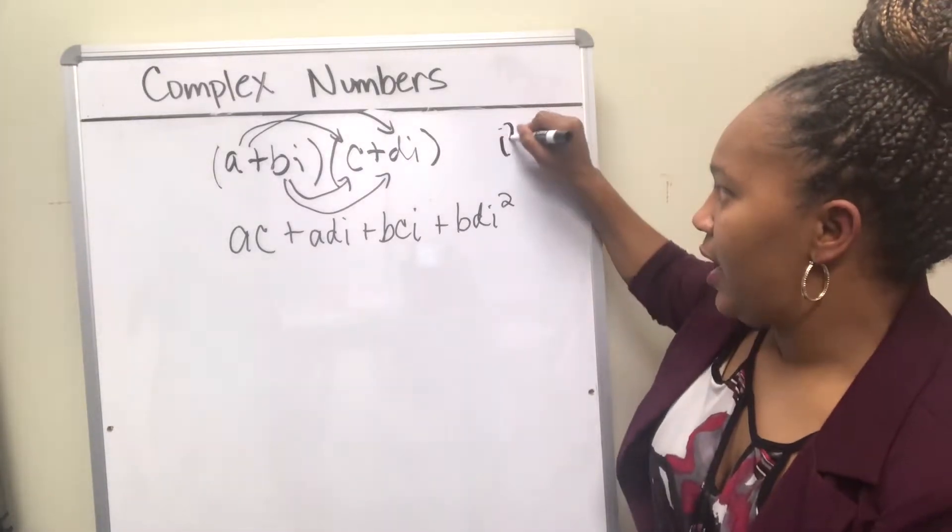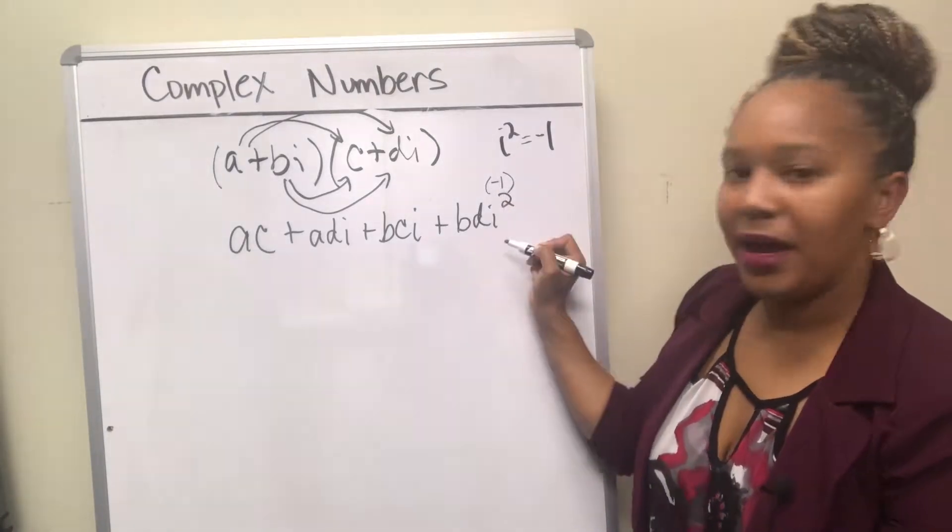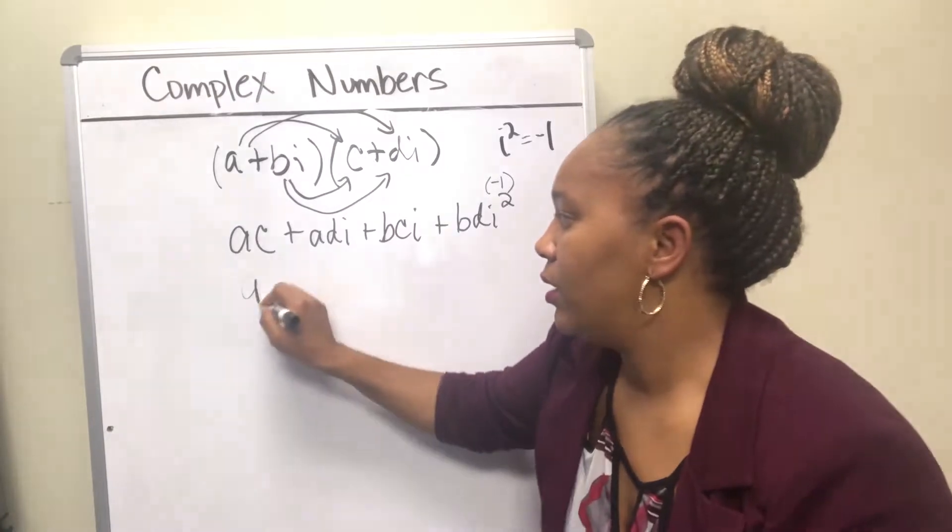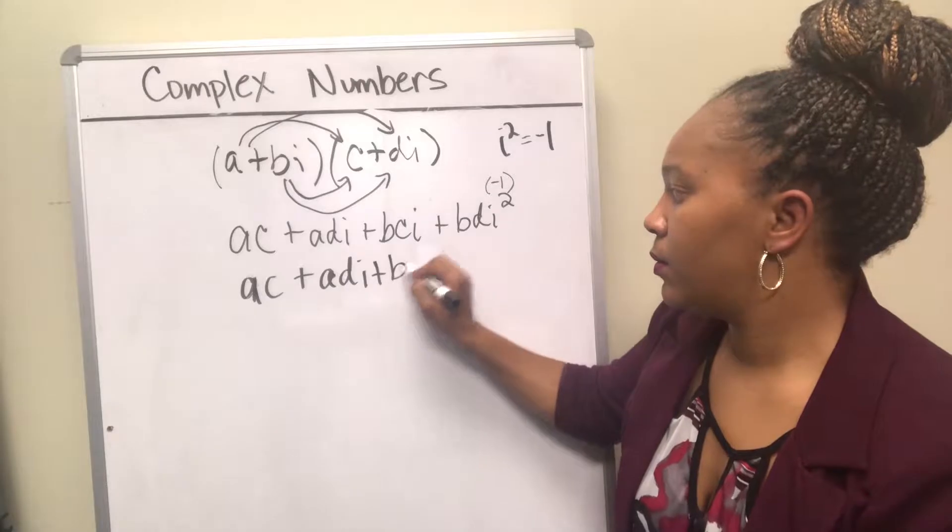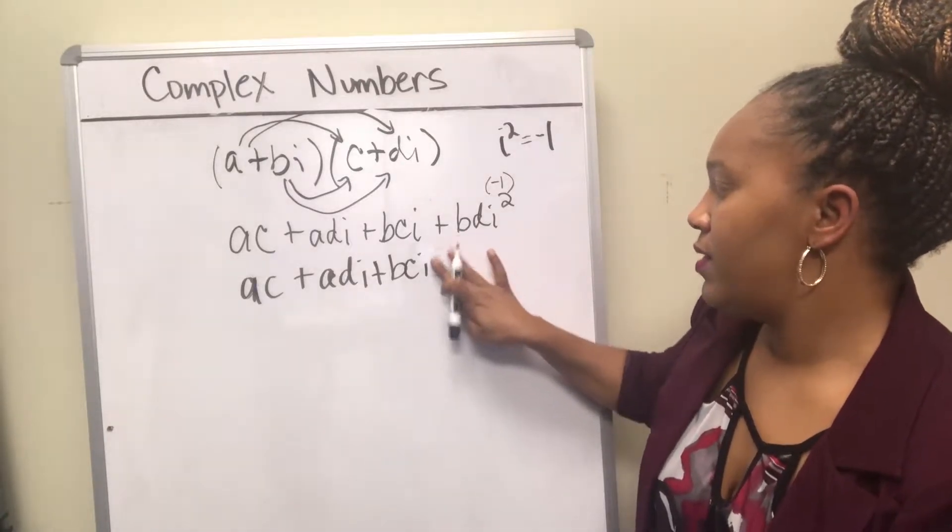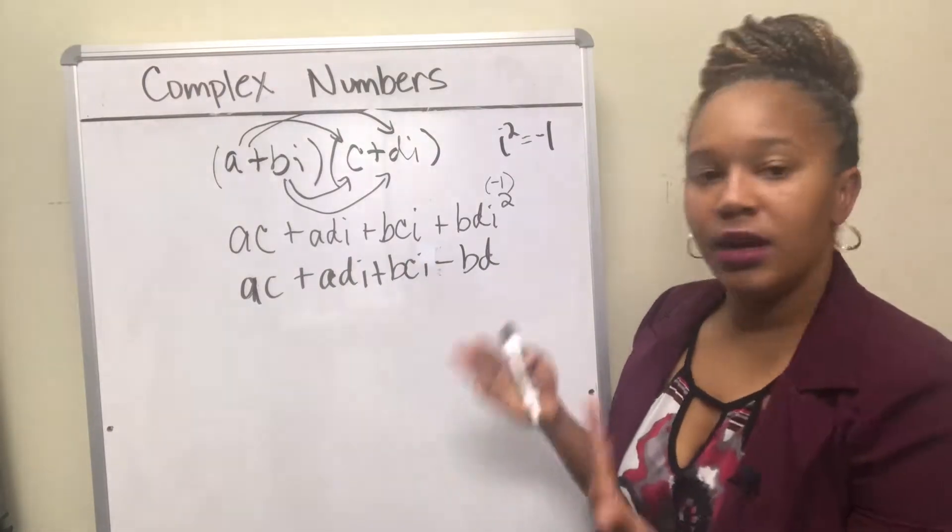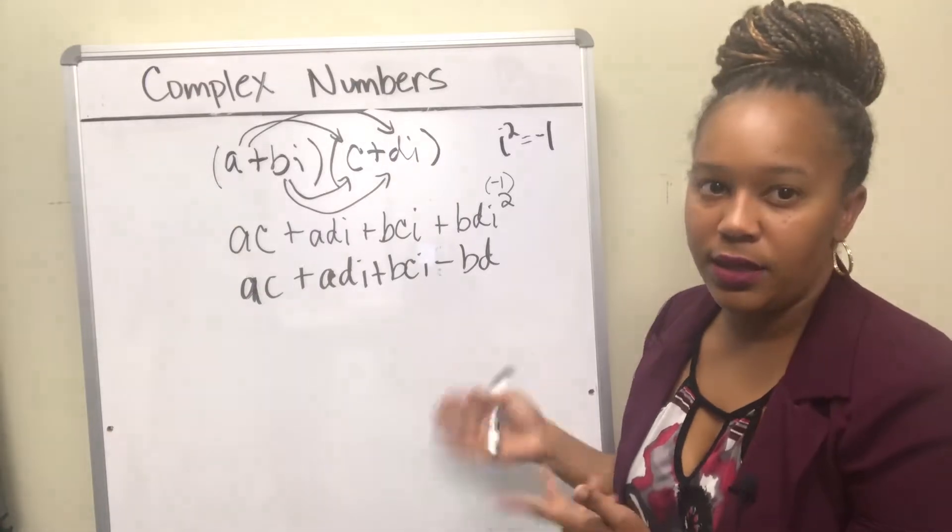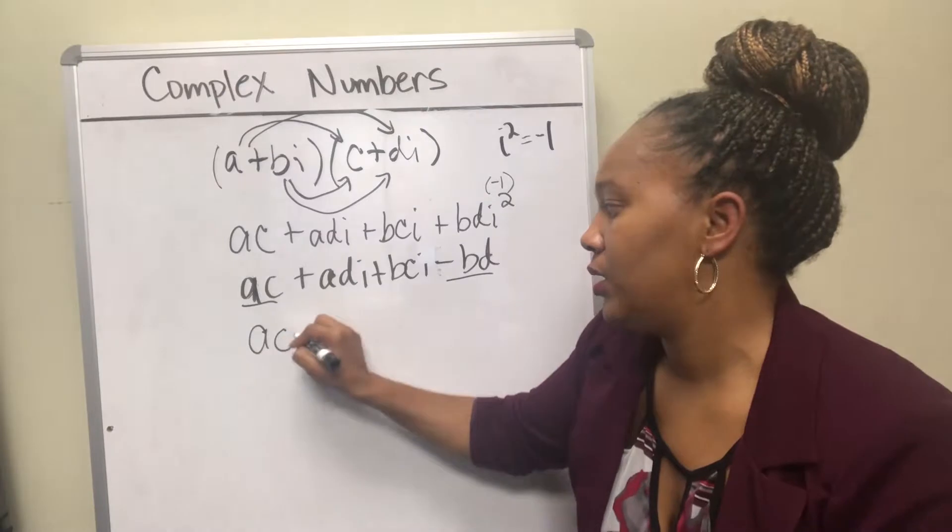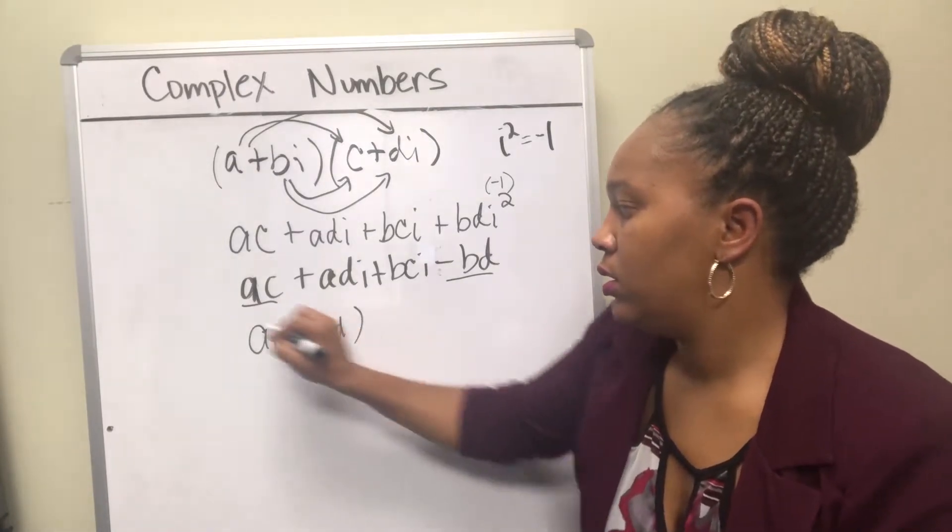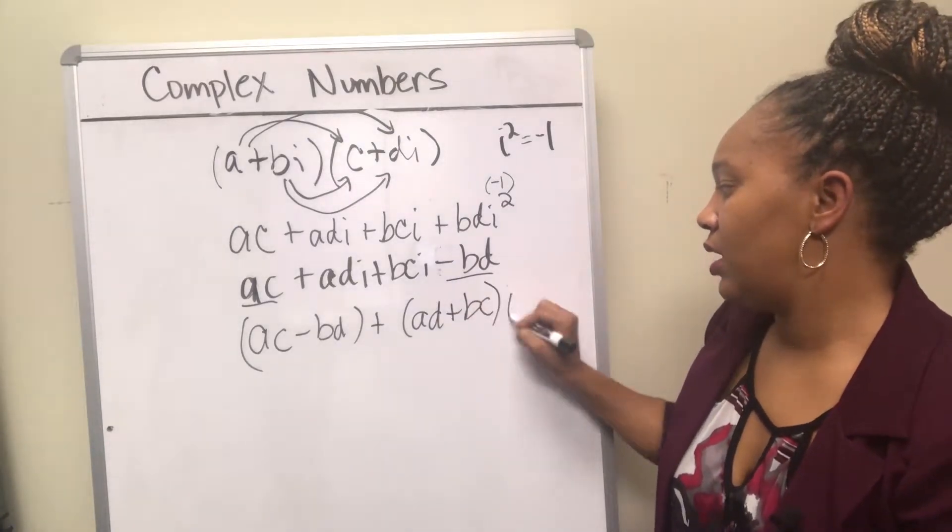Remember that i squared is equal to negative one. So if we multiply BD by negative one, then that becomes negative BD. And then combine your like terms or combine the real parts together and the imaginary parts together. So these two don't have an i on them, so those will get combined together. And these two have an i on them, so AD plus BC times i.